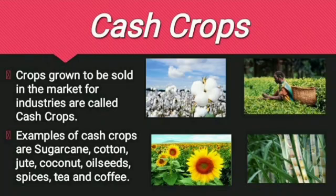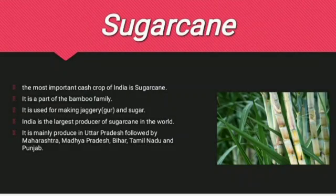Another category of crop apart from food crops is cash crops. These crops are grown to be sold in the market for industries. Examples of cash crops are sugarcane, cotton, jute, spices, tea, etc. Now let's begin with examples of such cash crops.